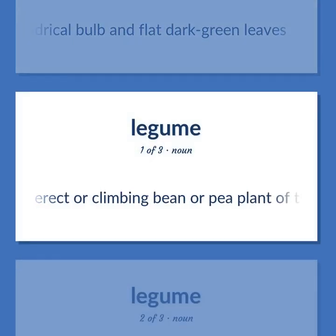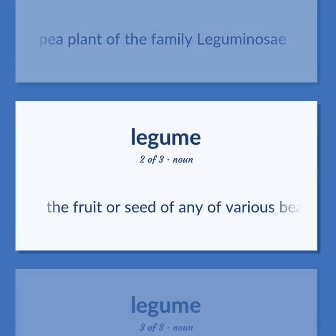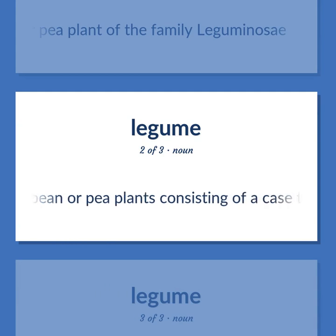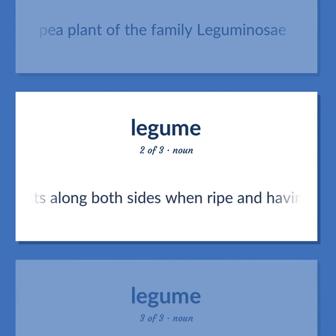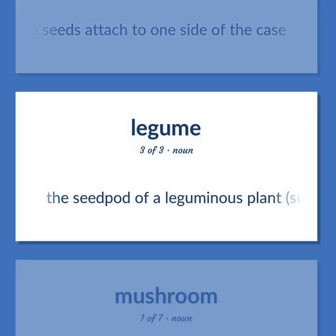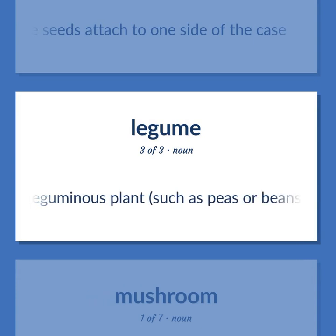Legume: An erect or climbing bean or pea plant of the family Leguminosae. The fruit or seed consists of a case that splits along both sides when ripe, having seeds attached to one side. The seed pod of a leguminous plant, such as peas, beans, or lentils.